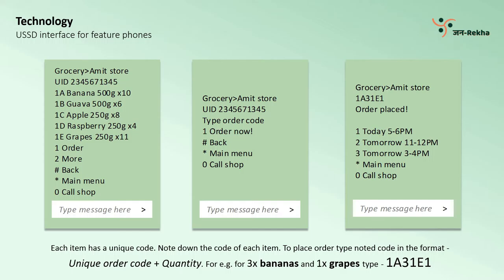Each item has a unique code. For example, if a user wants to buy 3 units of banana and 1 unit of grapes, the user has to write the code in the format: Unique Order Code plus Quantity of each order. Local shops will also have a unique code to identify them.